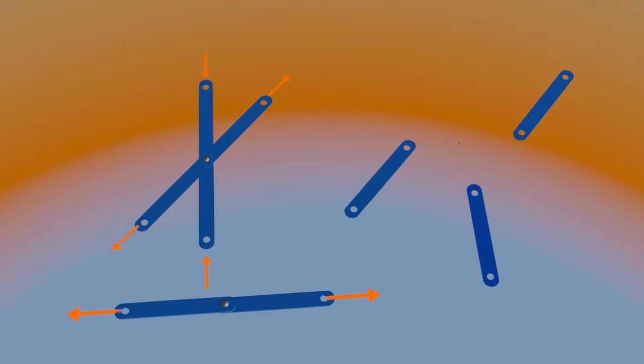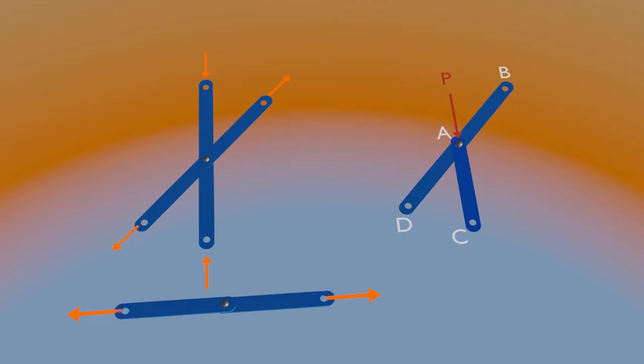Consider next, in which a joint connects three members and supports a load. Two members lie along the same line, and some load acts along the third member. To be in equilibrium, the forces in the two opposite members must be equal, and the force in the other member must equal the applied load. Therefore, joint's free body diagram would be like this.